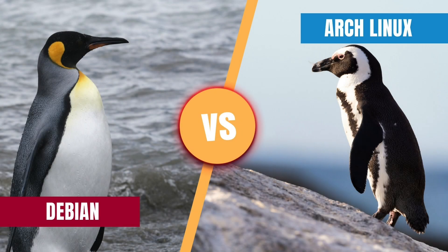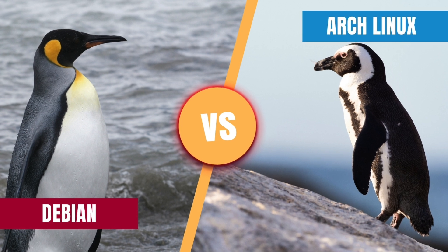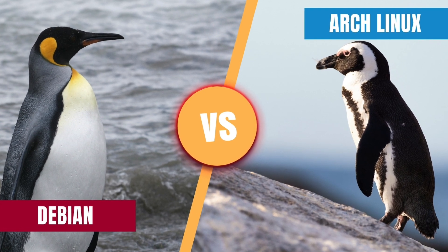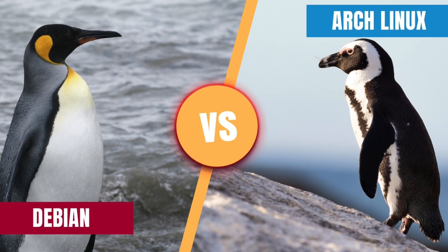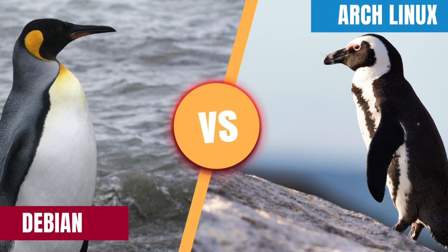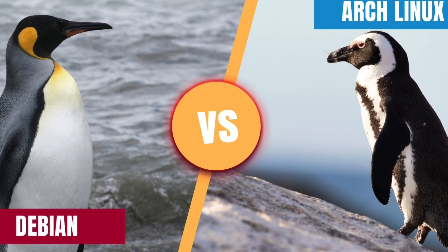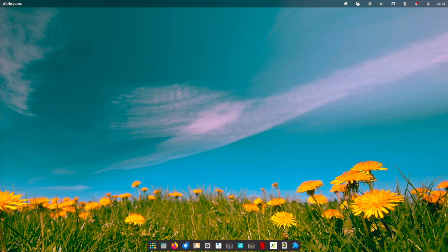Welcome back, ladies and gentlemen! Linux is renowned for its diverse array of distributions, each with its own unique focus, philosophy and user base. Two of the most prominent distributions, Debian and Arch Linux, are like polar opposites in the Linux universe. Despite the apparent differences, they share a common ground. In this in-depth comparison, we're diving deep to explore every facet. Now let's get it started.